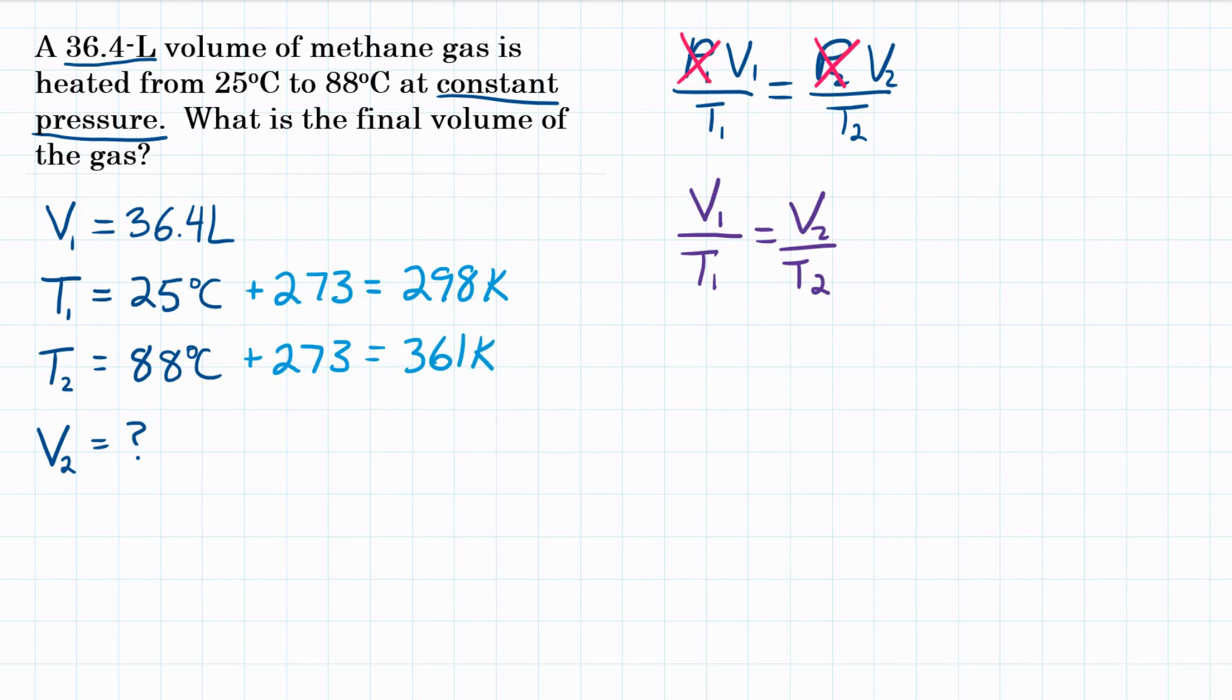So now at this point, we can plug in the values to our equation. So V1 is 36.4 liters, and that is over T1, which is now 298 Kelvin.